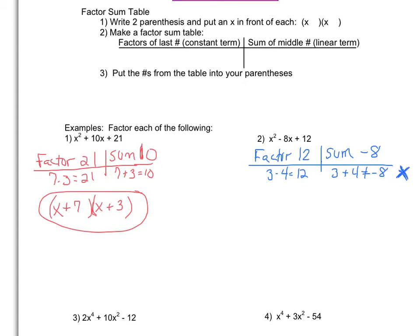After realizing that didn't work, I also realize that if I want two numbers to add to be a negative and multiply to be a positive, they're both going to have to be negative. So I'm going to try two new numbers, and I'm going to make them both negative. Maybe I try -6 times -2. That gives me a positive 12, and those also add to be -8.